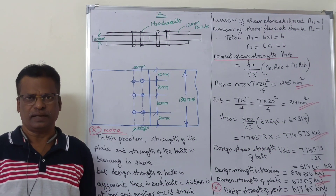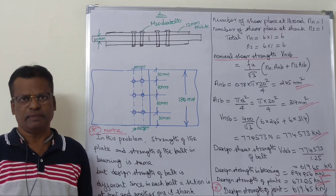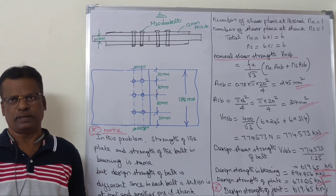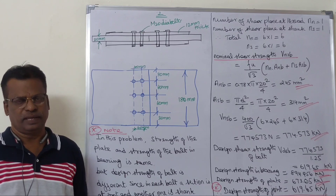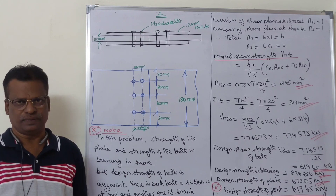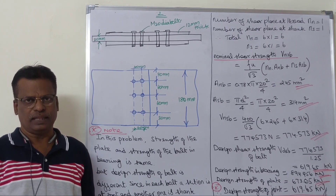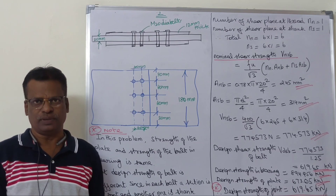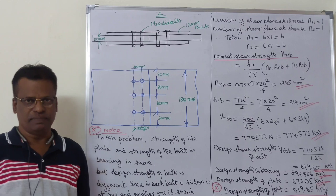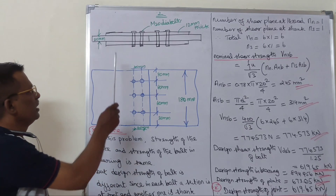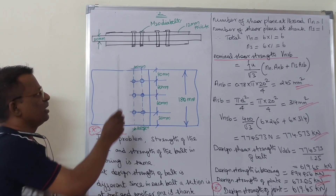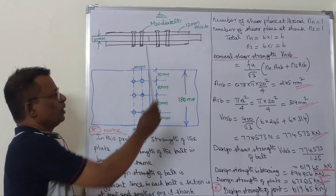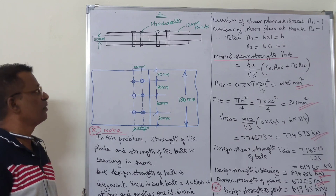In the last video, we talked about the same thickness and overlap between the lap joint and the efficiency of the lap joint. We will now talk about the same thickness and size of the lap joint, including the two main plates and cover plates, and the thickness of the lap joint.